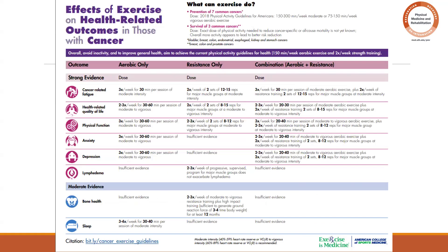This is based on the American College of Sports Medicine — it kind of summarizes all the recommendations for exercising in cancer. This is telling us that exercise prevents the seven most common cancers: bladder, breast, colon, endometrial, esophageal, kidney, and stomach cancer — seven. And it improves survival in breast, colon, and prostate cancer.